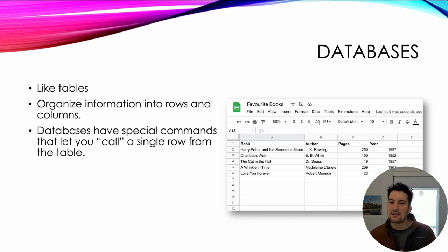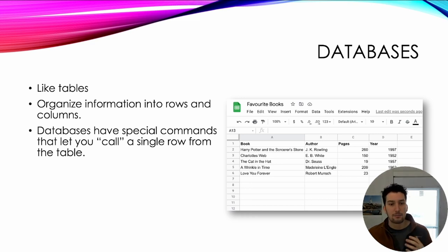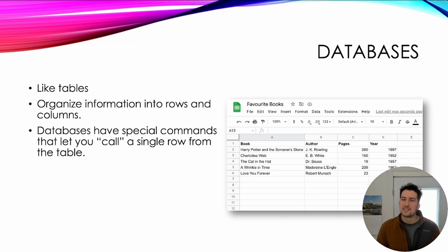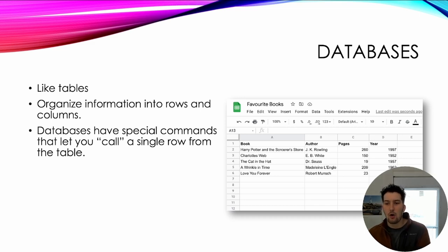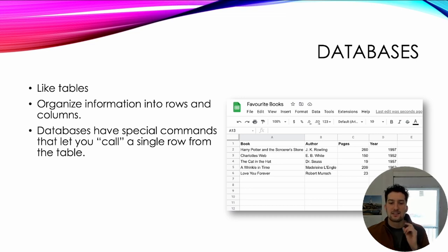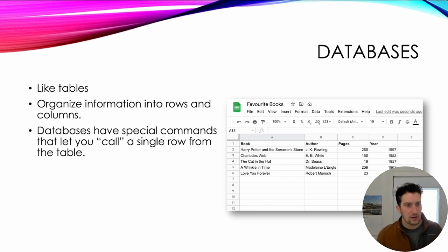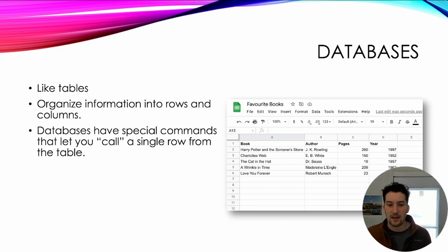Databases allow us to organize information into rows and columns, just like a table. It could be a table of contacts, a list of products, a list of videos — it could be anything. The thing that's distinct about databases is it allows you to get data from a particular row without having to check every single row. With databases, we can get a specific record by the ID of the row. If you look at the picture, I have a list of books and every row has an ID or row number next to it — that's how we get things out of a database.